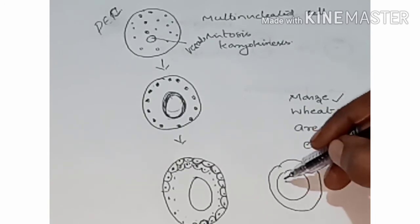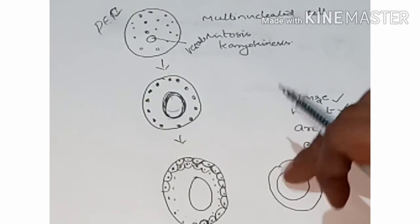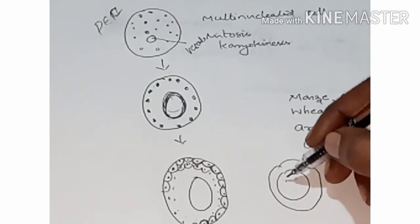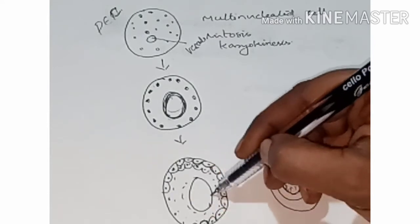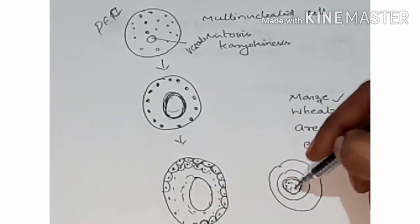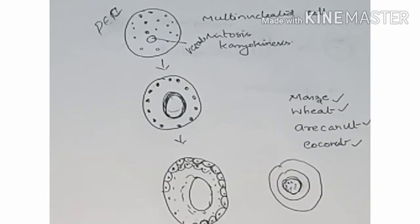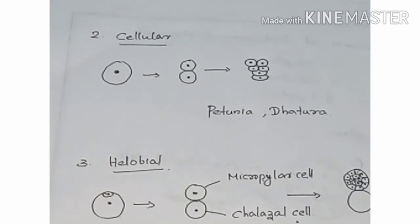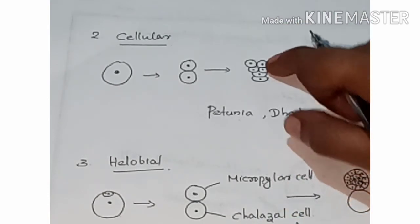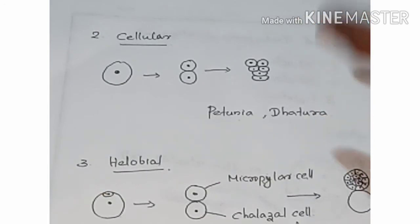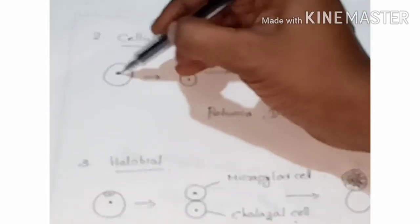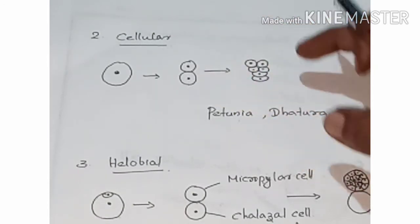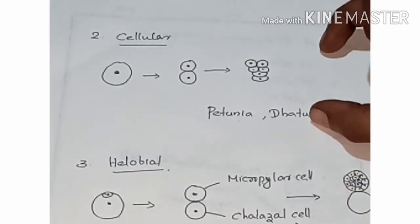In cellular endosperm development, there is cytokinesis after each nuclear division of the endosperm nucleus, unlike in nuclear endosperm development.